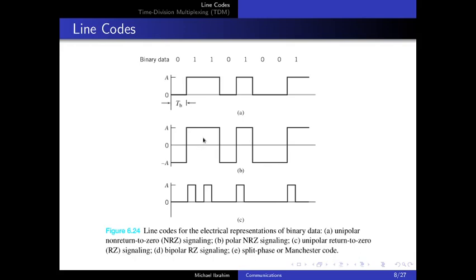For bipolar NRZ, long sequences of ones or zeros also cause synchronization problems. However, unipolar RZ guarantees a transition even during long sequences of ones, because the signal returns to zero mid-symbol, giving the receiver a way to extract and synchronize the clock. The drawback is that long sequences of zeros still cause synchronization loss.